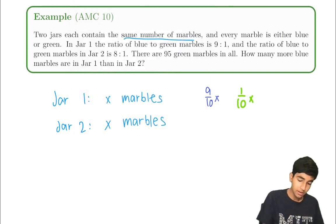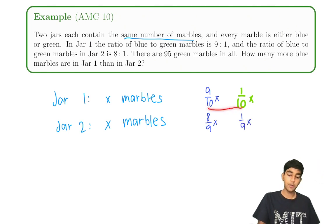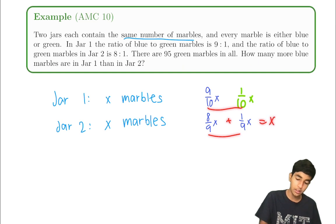Similarly, jar two blue to green eight to one which means eight ninths x and one ninths x because the total fraction of each must both the sum must be equal to x in both cases.